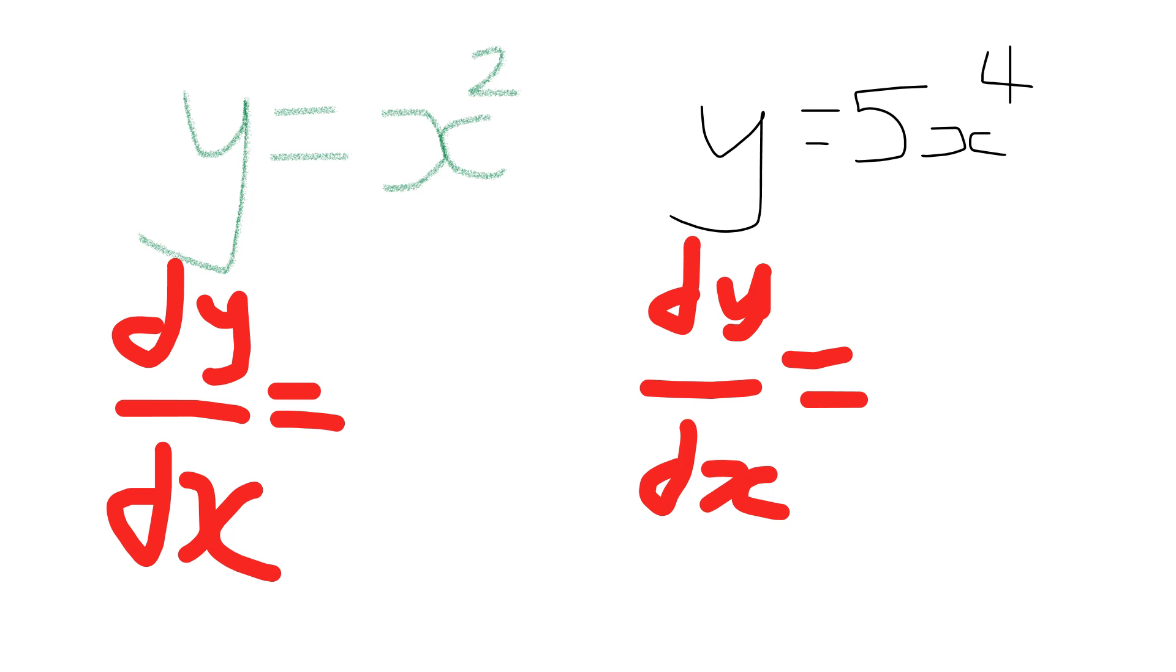We've got y equals x squared, so dy/dx - the rate of change of y with respect to x. The power comes down as a multiplier, you've got a 1 here, so 1 times 2 is 2. Then put the x there and the power reduces by 1, so 2x to the 1, which is 2x.